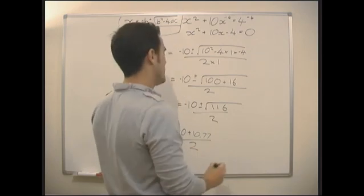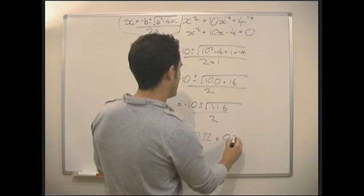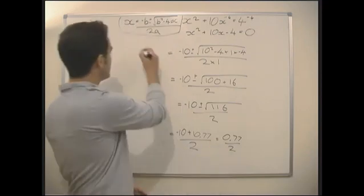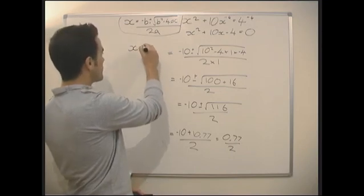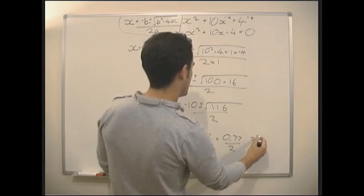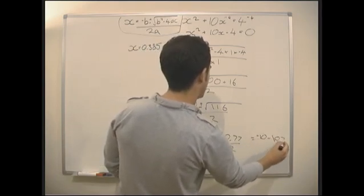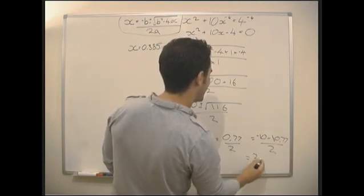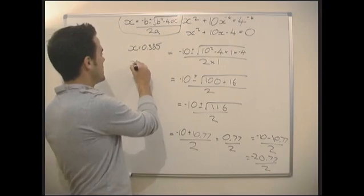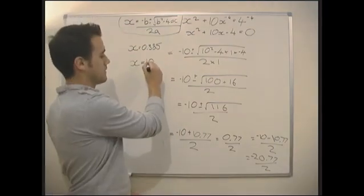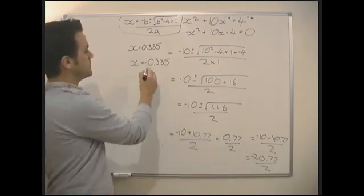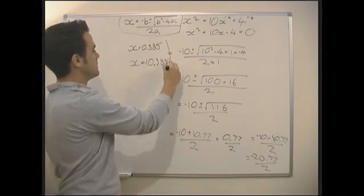The square root of 116 is approximately 10.77. So our first value is minus 10 plus 10.77 divided by 2, which is 0.77 divided by 2, giving us x equals 0.385. Our second value is minus 10 minus 10.77 divided by 2, which is minus 20.77 divided by 2, giving us x equals minus 10.385. So those are our two x values — that is our solution.